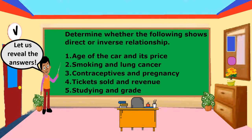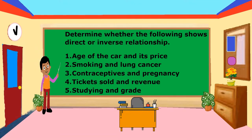Let us reveal the answers. 1. Age of the car and its price — it's inverse. Meaning, as the age of your car increases, the price of it decreases. 2. Smoking and lung cancer — direct. Meaning, as you increase your smoking or the number of cigarettes you smoke, it will have a great chance of having lung cancer.